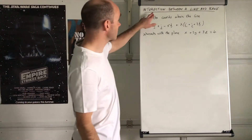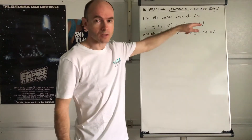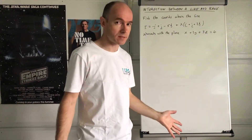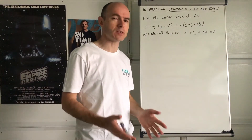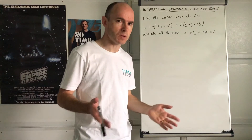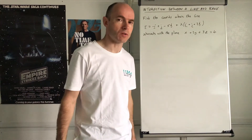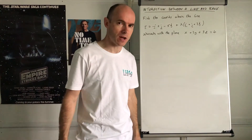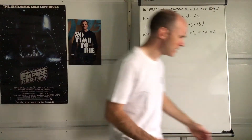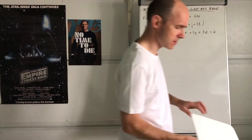This video is about the intersection between a line and a plane. Earlier we did the intersection between two lines; now we've introduced planes. We look at the coordinates of the point of intersection between the line and the plane. Before we do that, there are various possibilities to consider.